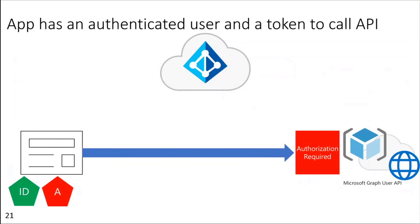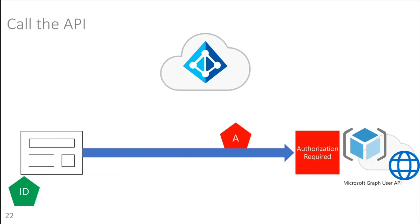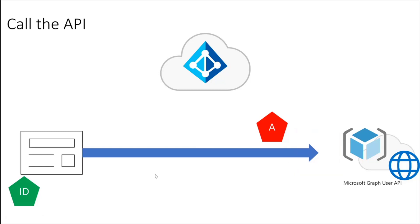Now the app has been authenticated — it has an authenticated user and also an access token to call the API. The app will make the request to the API endpoint and in its authorization header of the HTTP GET request, it will pass the access token as a bearer token. It is the work of Microsoft Graph API to validate the token and make sure that the particular application is authorized. Once this API validates the token, it will authorize access to the application on behalf of the user.